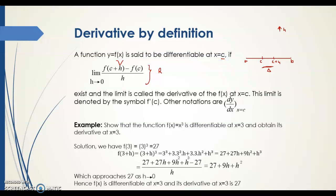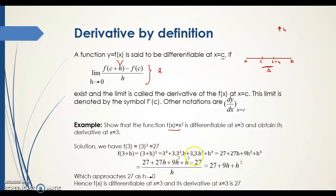Let's understand this with an example. Suppose f(x) = x³ and it is differentiable at x = 3. We need to find its derivative at x = 3, so c = 3. First, calculate f(c): f(3) = 3³ = 27. Next, find f(c+h): f(3+h) = (3+h)³. Using the formula (a+b)³ = a³ + 3a²b + 3ab² + b³, this expands to 27 + 3(9)h + 3(3)h² + h³.